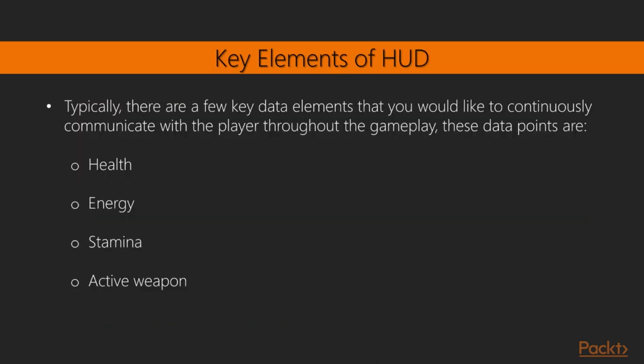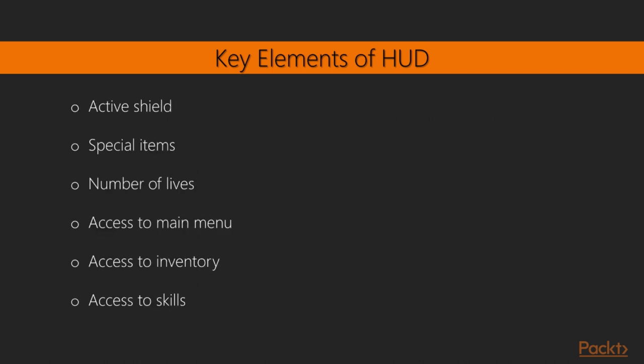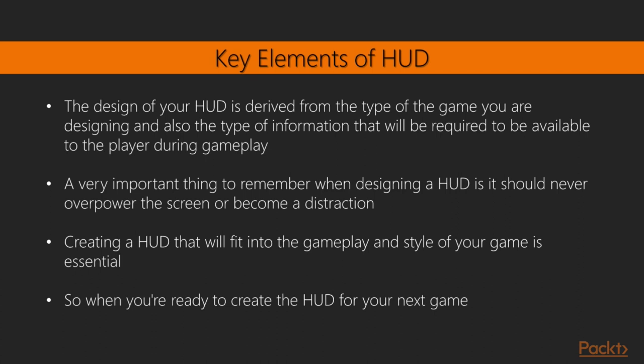The HUD is frequently used to simultaneously display several pieces of information, including the main character's health, items, and indication of game progression. The design of the HUD is crucial for RPG games. There are a few key data elements that you would like to continuously communicate with the player: Health, Energy, Stamina, Active Weapon, Active Shield, Special Items, Number of Lives, Access to Main Menu, Access to Inventory, and Access to Skills.